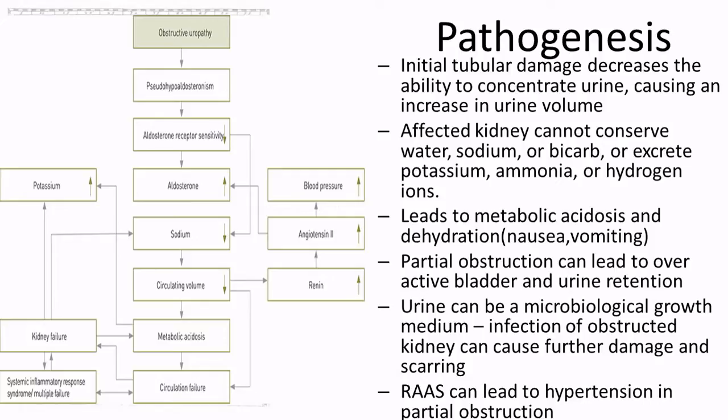Partial obstruction irritates the lining of the tract, causing an overactive bladder that never completely fills. People urinate frequently and don't fully empty. Ultrasound may show remaining urine in the bladder after urination. Stagnant urine increases microbial growth and UTI risk. The renin-angiotensin-aldosterone system cranks up — causing vasoconstriction and aldosterone release — which may cause hypertension despite high urine output.